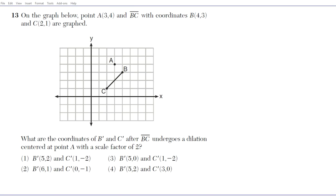In this question we're dealing with the dilation of a line segment about a point that is not the origin. It reads: on the graph below, point A (3,4) and segment BC with coordinates B (4,3) and C (2,1) are graphed. The question asks for the coordinates of B prime and C prime after segment BC undergoes a dilation centered at point A with a scale factor of two.